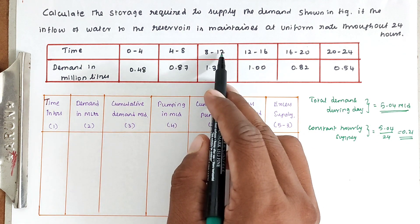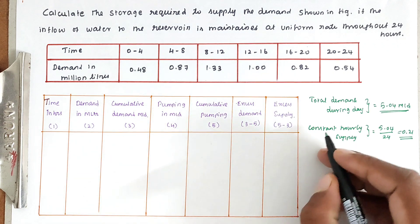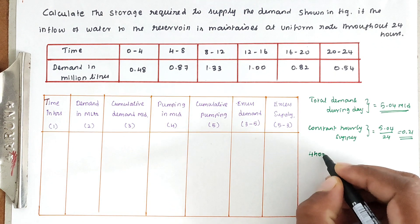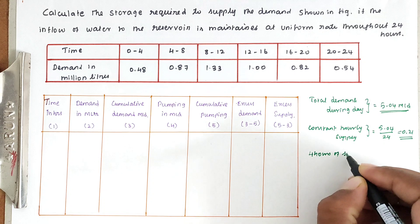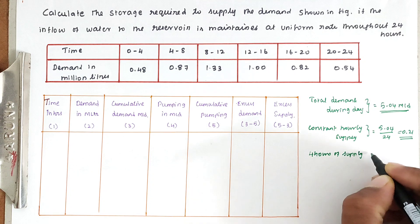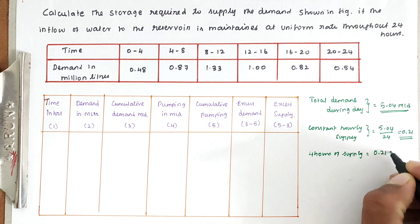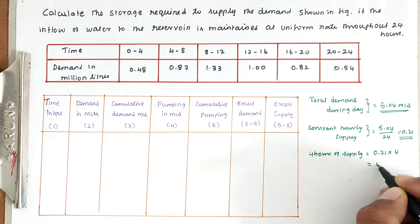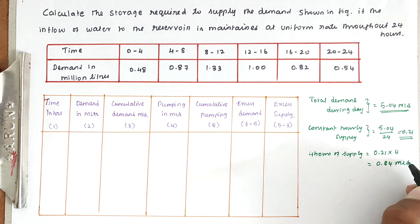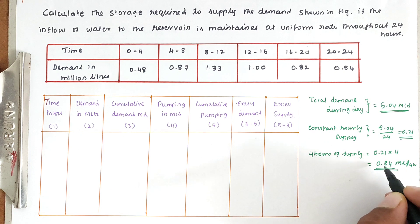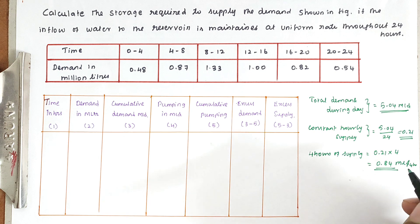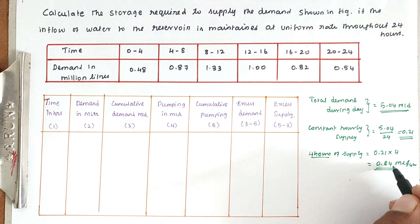Since the intervals are 4 hours long and per hour we supply 0.21 million liters, for every 4-hour period we supply 0.84 million liters. So every 4 hours we can send 0.84 million liters.